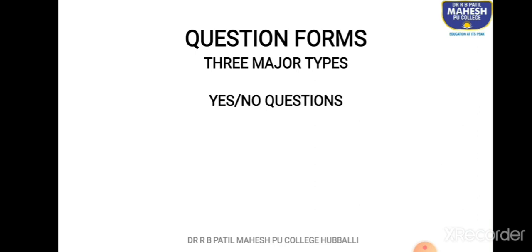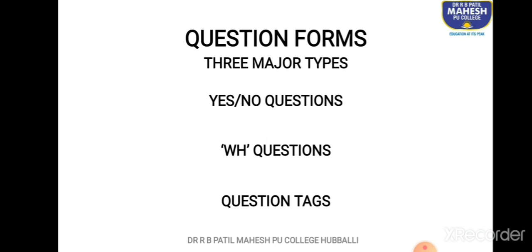Let us begin. In order to frame questions, we need to understand different forms of questions. There are three major types. The first one is yes or no questions. In yes or no questions, whenever a question is asked, the answer must be either yes or no. There can be an additional answer, but it always follows after either yes or no. The second type is WH family questions, and the third one is question tags. Let us begin with yes or no questions.